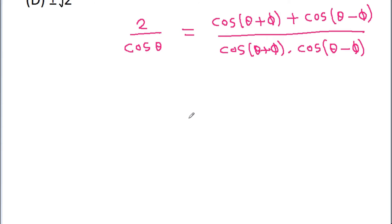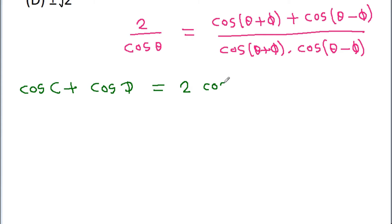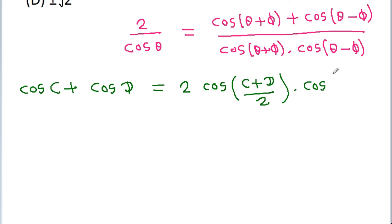We know that cos C + cos D is equal to 2·cos((C+D)/2)·cos((C-D)/2).